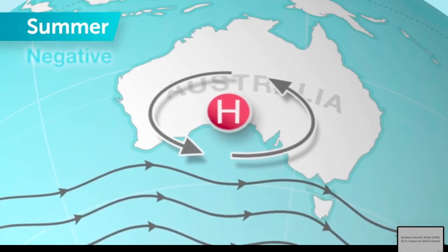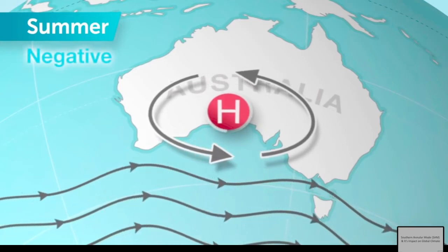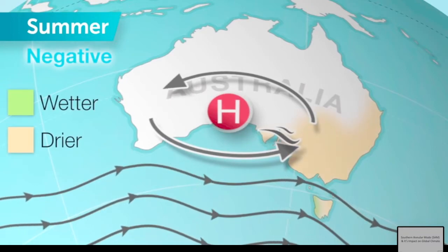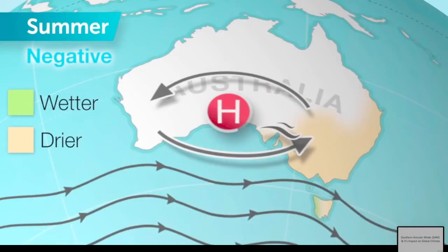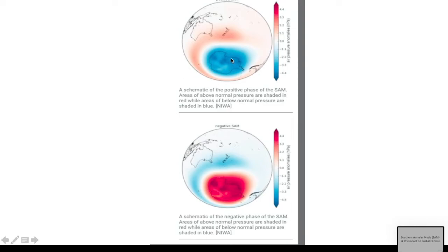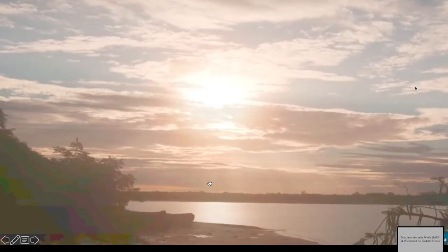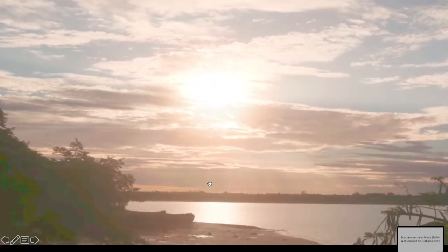Let me be very clear: during the positive phase, we have concentration of westerly winds toward Antarctica. During the negative phase, they expand away from Antarctica. During positive phase, you can see there is a low pressure anomaly over Antarctica because everything is concentrated there. During negative phase, everything is expanded, so there is a high pressure zone over Antarctica.